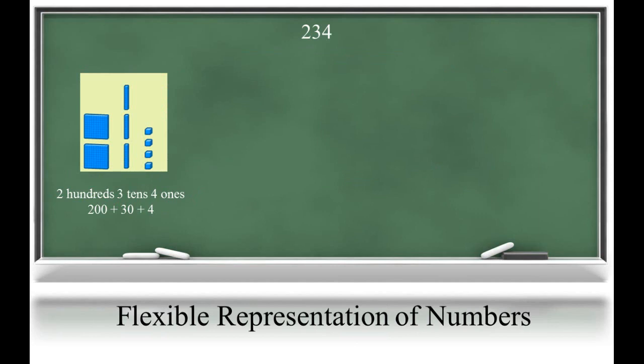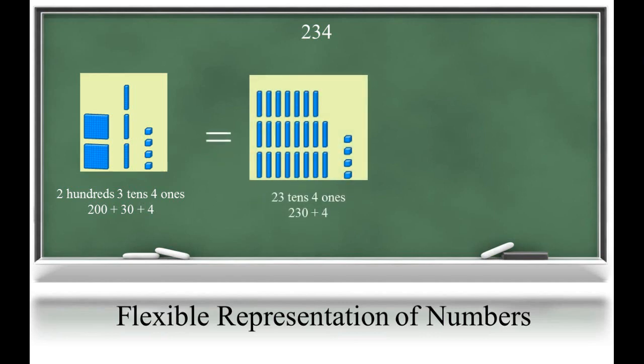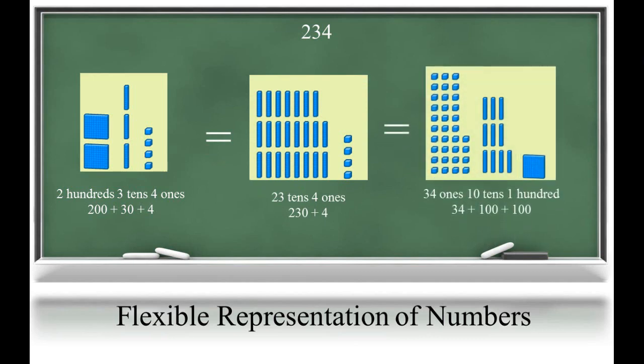Just as in the previous unit, students continue to strengthen their number sense by representing numbers flexibly. This flexible thinking enhances aptitude for mental math and will prepare the learner for understanding regrouping in later units focused on addition and subtraction. For example, the value 234 may be expressed as two hundreds, three tens, four ones, or twenty-three tens, four ones, or thirty-four ones, ten tens, one hundred. There are many other ways 234 can be flexibly represented. Challenge your child to come up with some more ways.